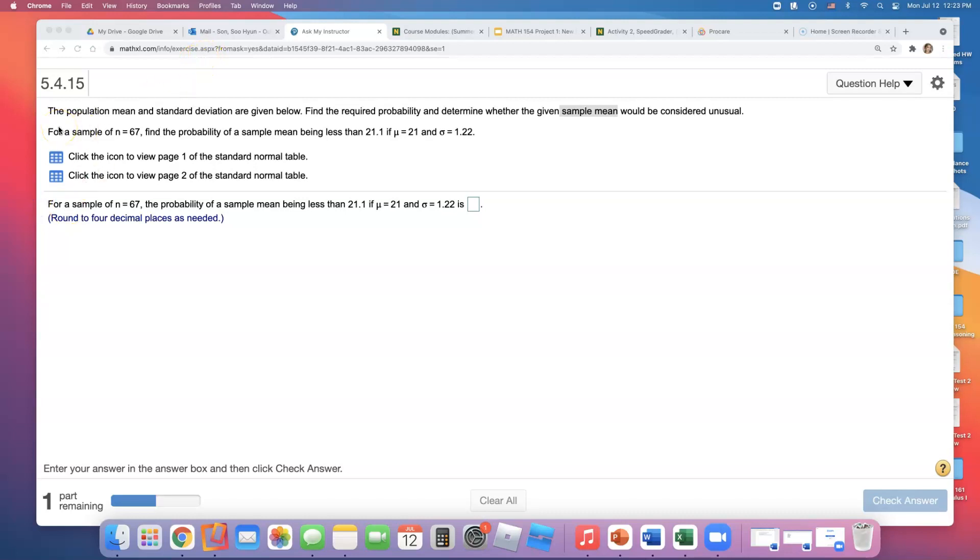The population mean and standard deviation are given. Find the required probability and determine whether the given sample mean would be considered unusual for a sample of n equals 67. This is a sampling distribution problem, not just picking a random observation. This is about getting a sample of size 67 and finding the chance that the sample mean is less than 21.1. For sampling distribution of sample means, we have a slightly different formula for standard deviation.